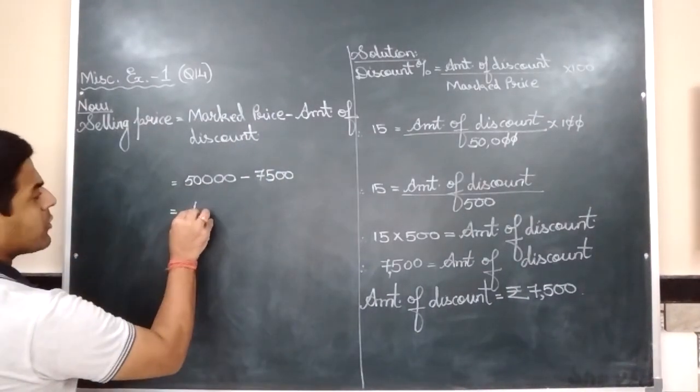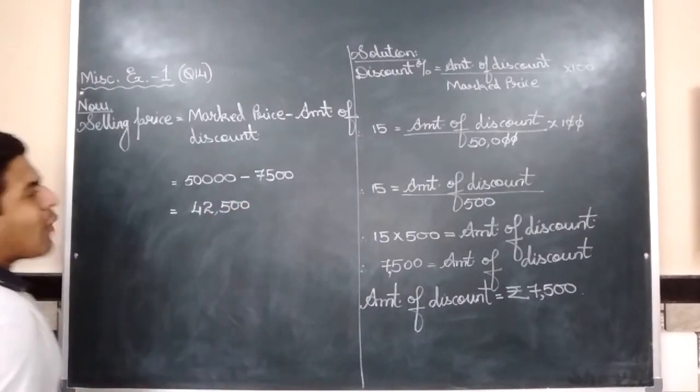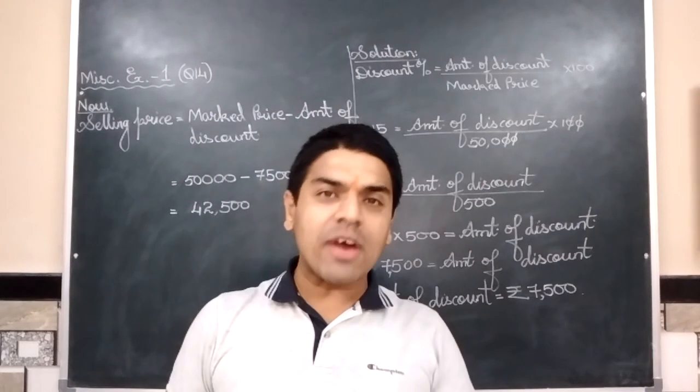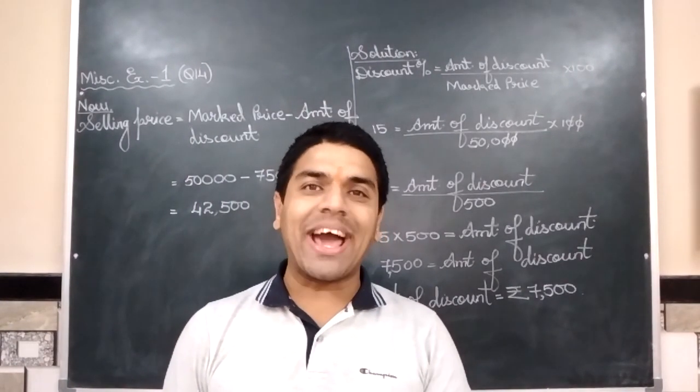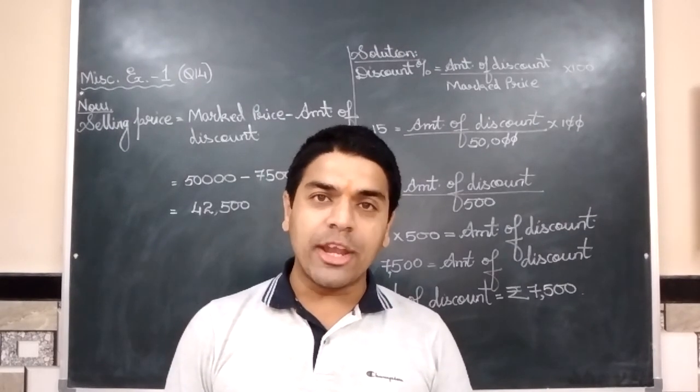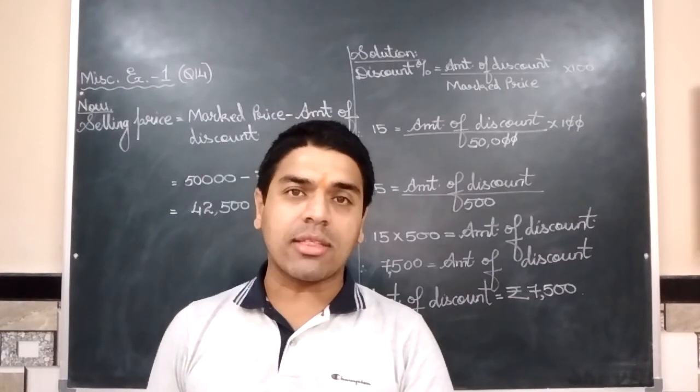So I will write here 42,500. So while submission, when you have submitted a paper, there were many over smart chaps which have made a working column. In spite of telling in each and every video, go to the rough column, work out and then write the answer.